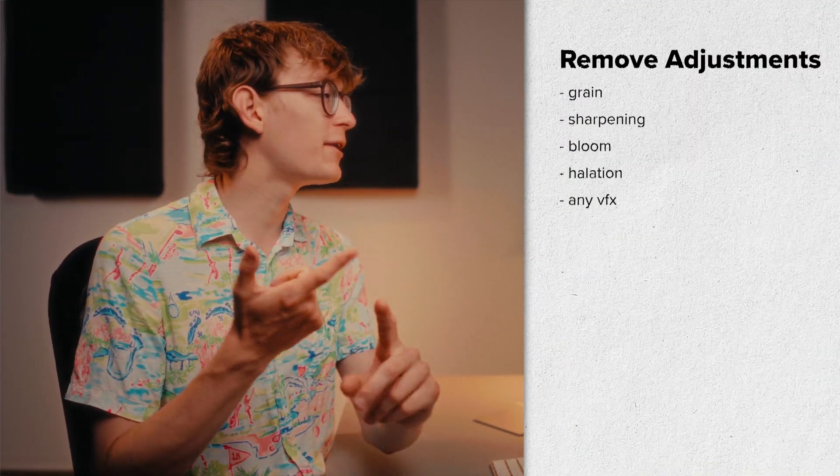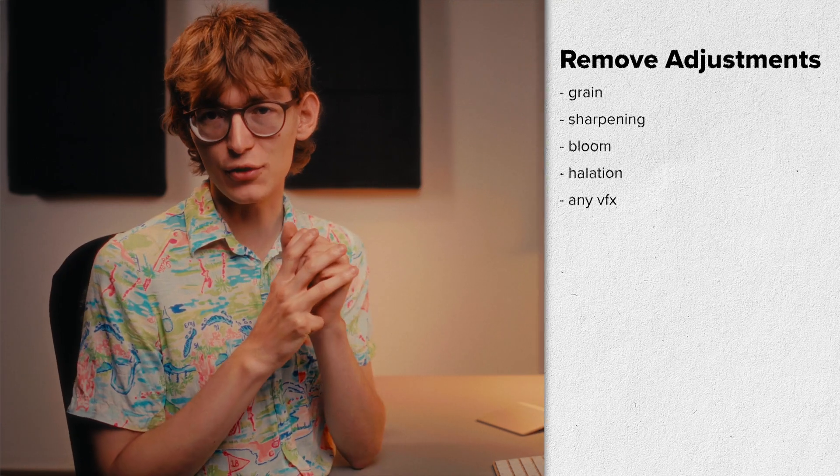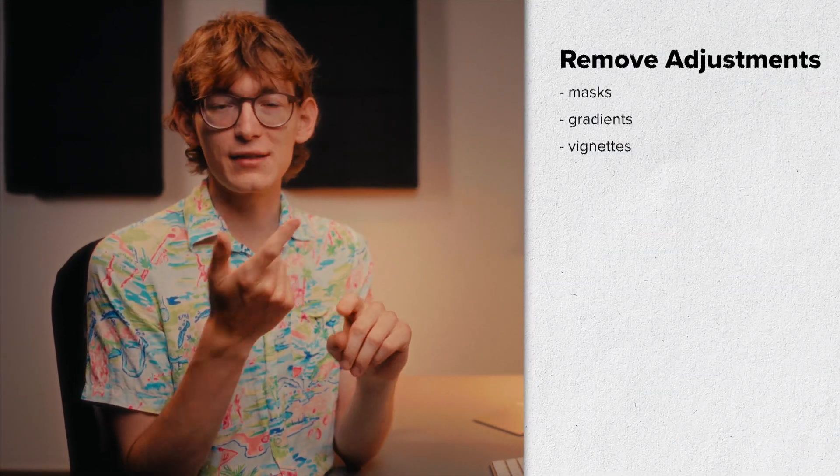Since this image is just like a spreadsheet, we need to make sure the color values are not corrupted. You must get rid of any adjustments that do not produce universally true color values, because a LUT file is just a table of color values. Adjustments to remove include grain, sharpening, bloom, halation, or any other visual effects. You must also get rid of local adjustments like masks, gradients, and vignettes — having a gradient mask on a spreadsheet doesn't mean anything and corrupts the integrity of your data.